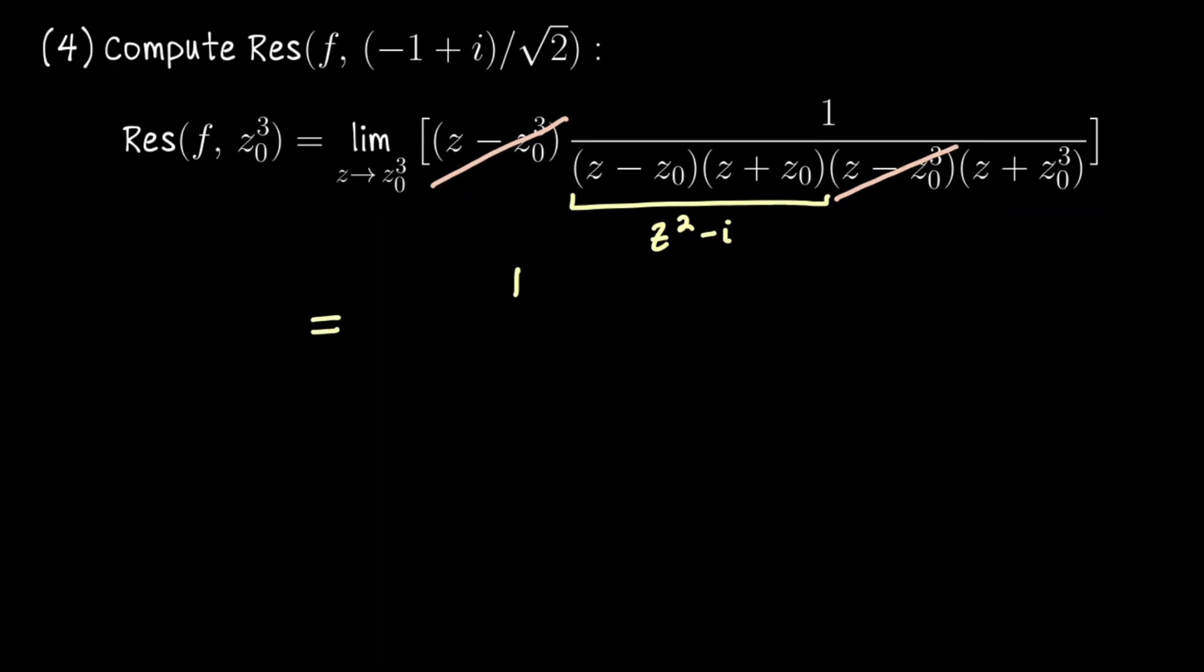we'll get 1 divided by z naught cubed squared so that's z naught to the sixth power minus i times 2 z naught cubed. Algebraically you might want to think of this as z naught squared cubed instead so that's i cubed or you could imagine rotating 6 times by pi over 4 in the complex plane. Regardless both of them will land you on negative i for that first term so that this residue left in a form similar to the first computation that we did is negative 1 over 4i z naught cubed.